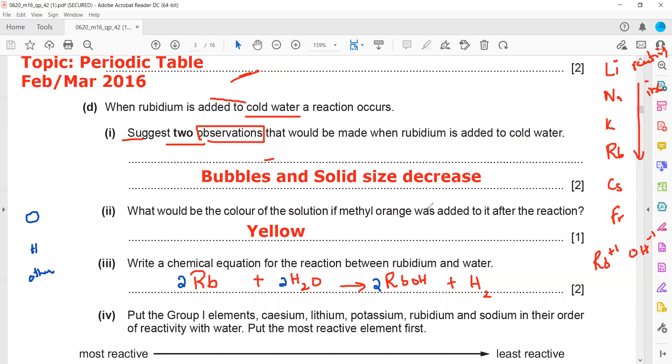So one mark is for writing the correct reactants and products with symbols, and the second mark is for the balancing. After balancing, the next part.